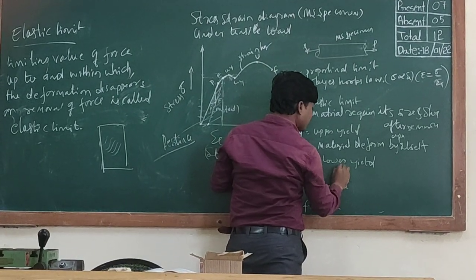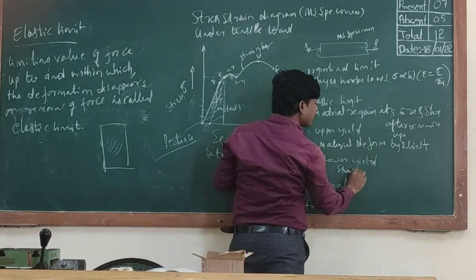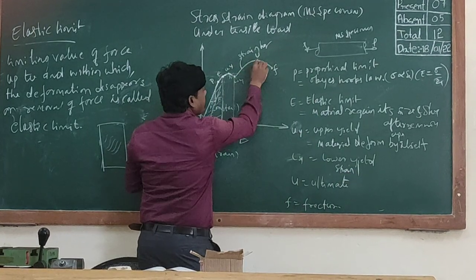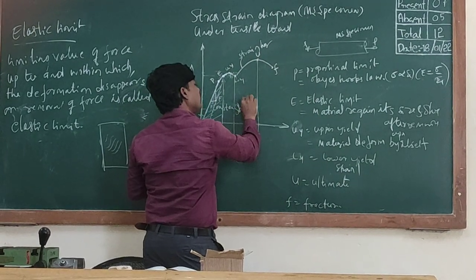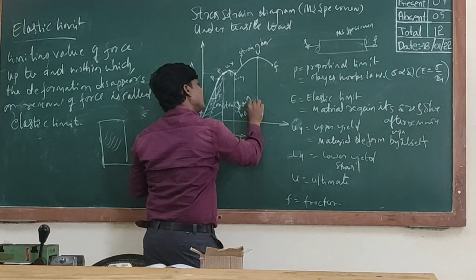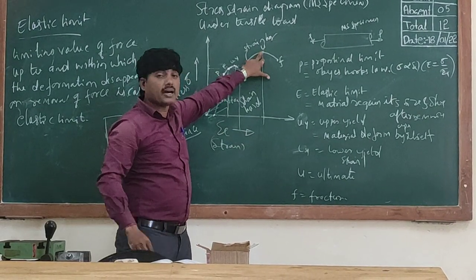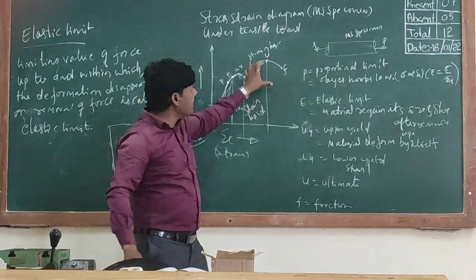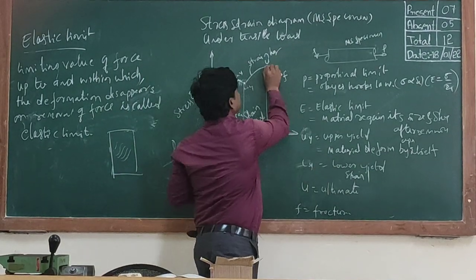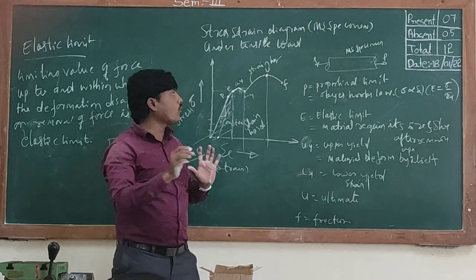The first step is the strength. The upper limit is the ultimate position. This is the maximum of the body.